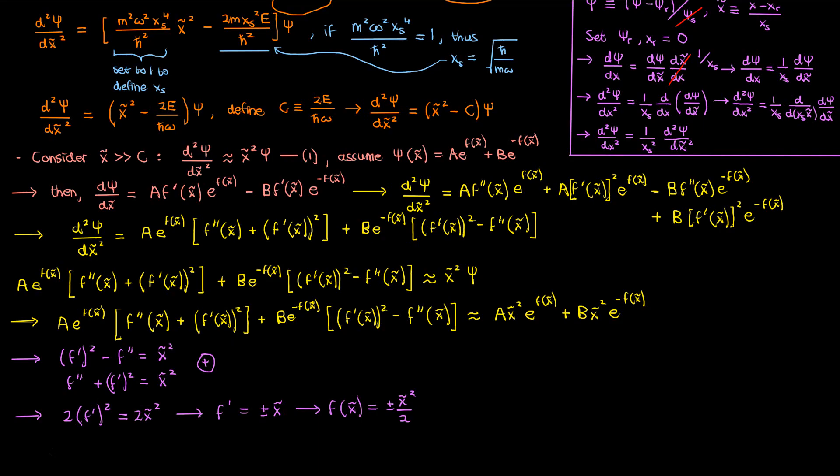So in the end using this approach our hypothesized solution psi to this dimensionless quantum harmonic Schrödinger equation that is approximately true at the edges of the domain is given by the sum of the exponentials of x tilde squared over 2 and negative x tilde squared over 2.